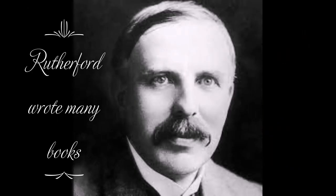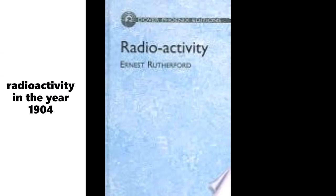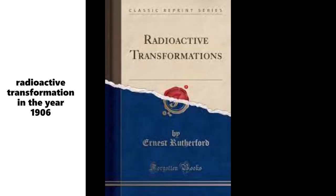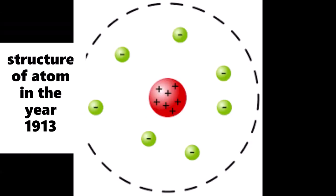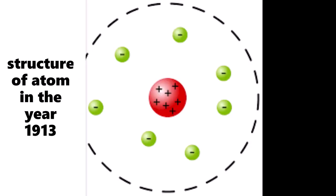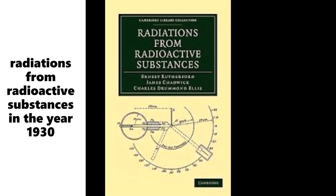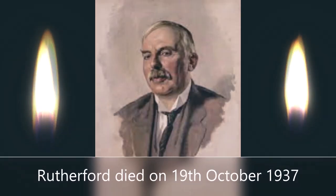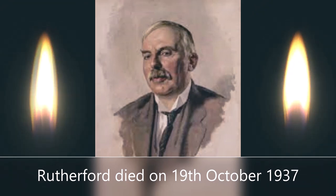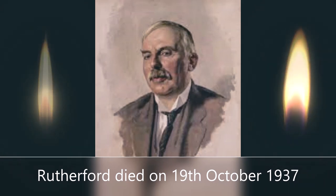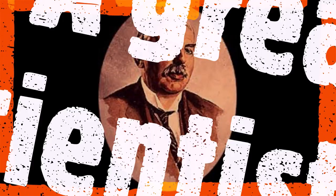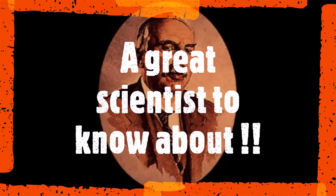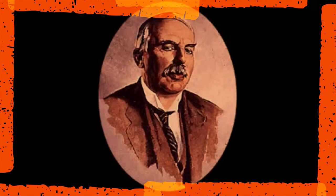Rutherford wrote many books during his lifetime: Radioactivity in the year 1904, Radioactive Transformation in the year 1906, The Structure of Atom in the year 1913, and Radiations from Radioactive Substances in the year 1930. He remained active and working to the very end of his life. On 19th October 1937, this famous scientist passed away. His discoveries made him immortal in the pages of history. These were a few facts about the great scientist Rutherford, who is definitely a person worth knowing about.